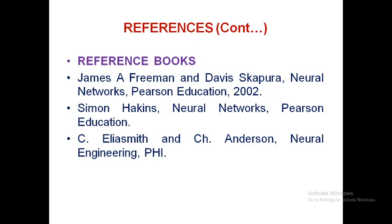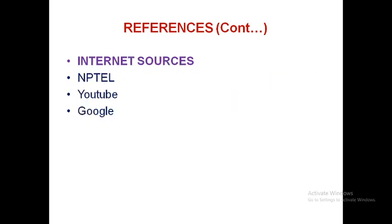Reference books include Neural Networks by James A. Freeman and David Skapura, Neural Networks by Simon Haykin, and Neural Engineering by Elias and Anderson. Along with these, some material may be sourced from internet resources like NPTEL, YouTube, or Google. This concludes the introduction to the course contents of Artificial Neural Networks and Fuzzy Systems. From the next class onwards we'll cover the topics one by one — thank you all.